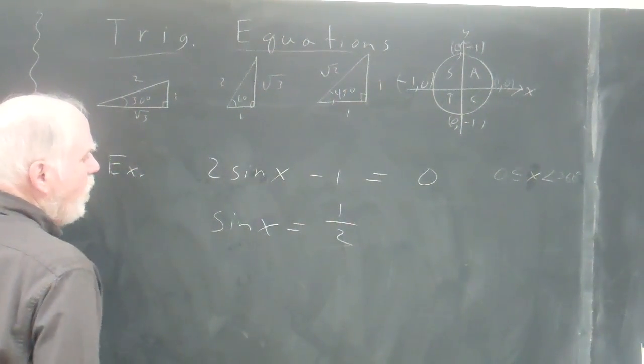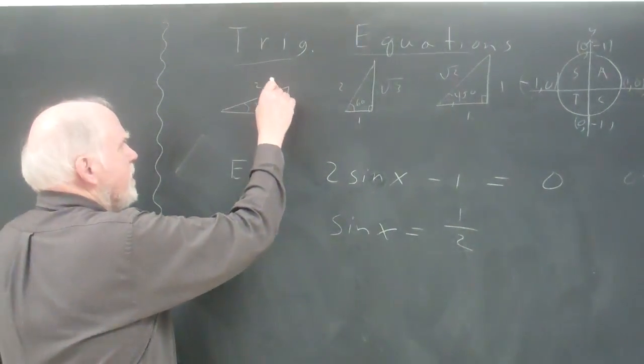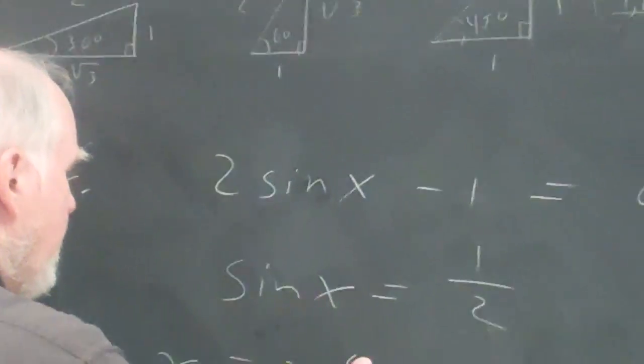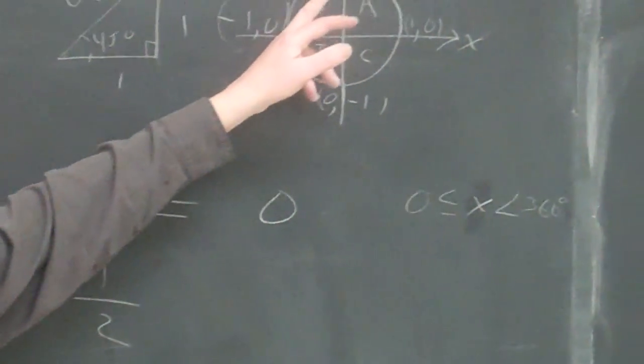Now I say to myself, what angle, sine of what angle give me one-half? Well, 30 degrees is opposite over hypotenuse. So obviously x could be 30 degrees, or the sine is also positive. All of them are positive in the first quadrant.